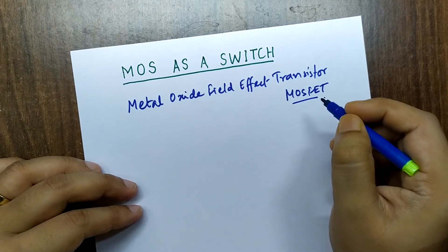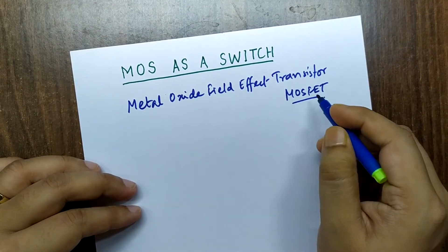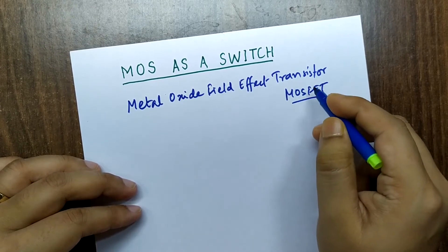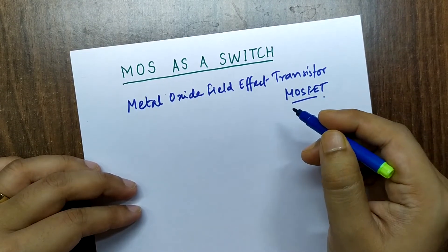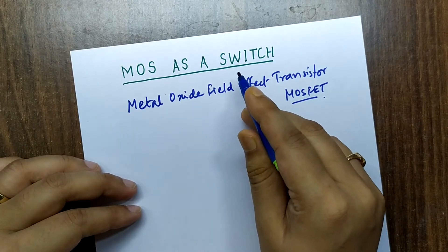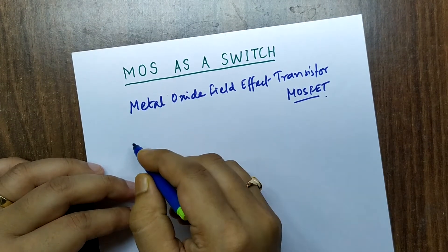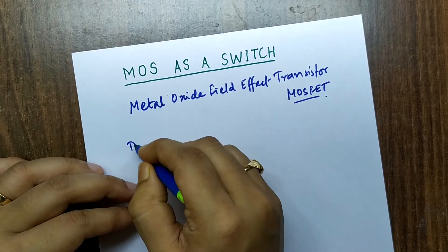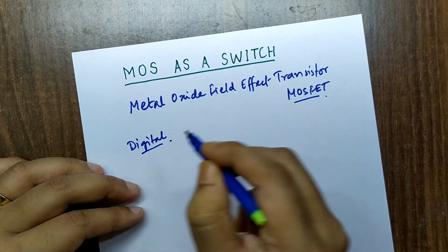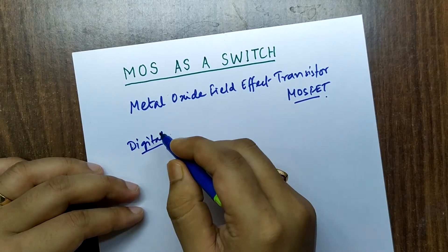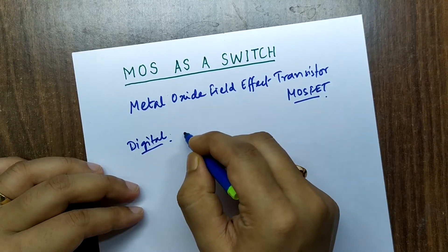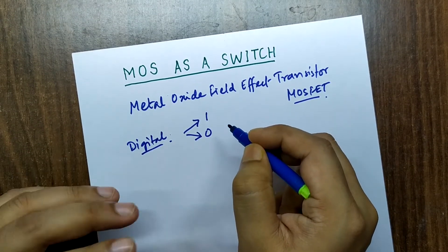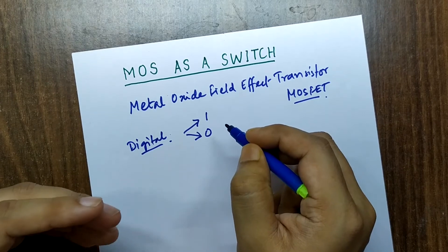Today in this particular video we are going to see how a MOSFET can act as a switch. Whenever we call it a digital switch, it means either it will operate as one or it will operate as zero — that is what we mean by a switch.